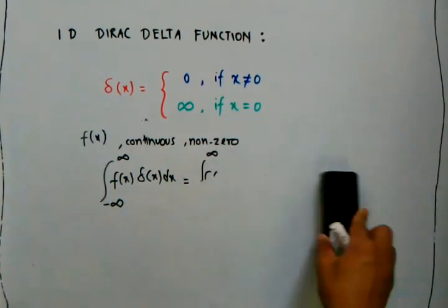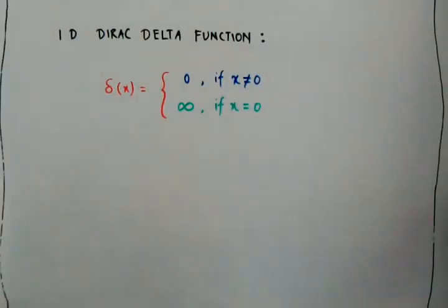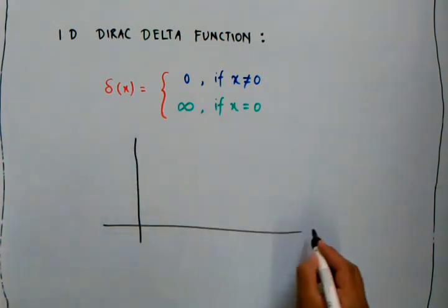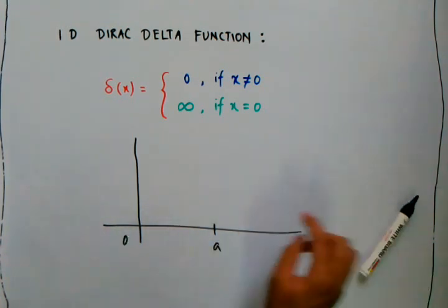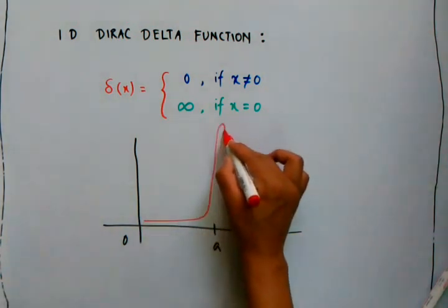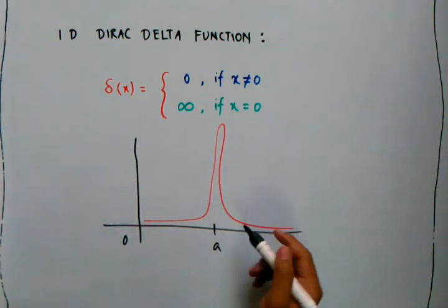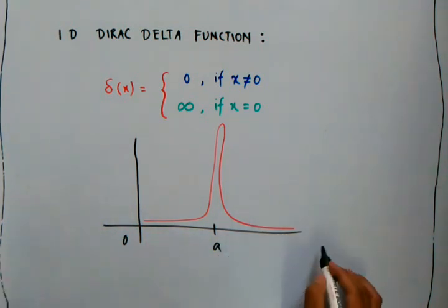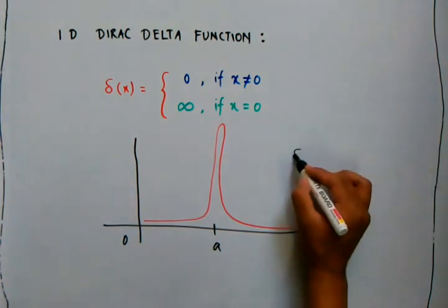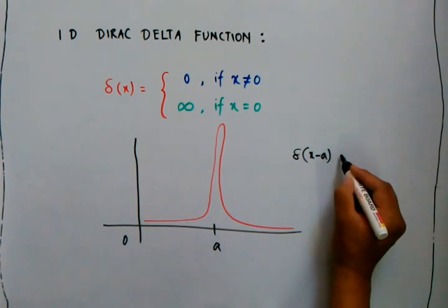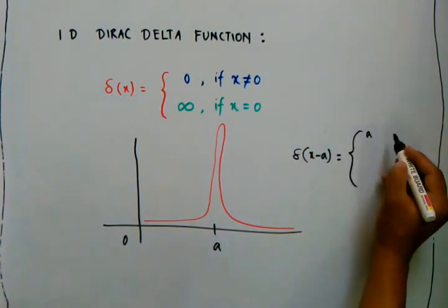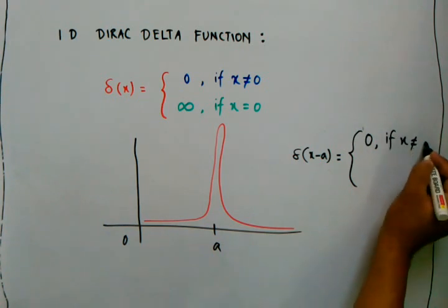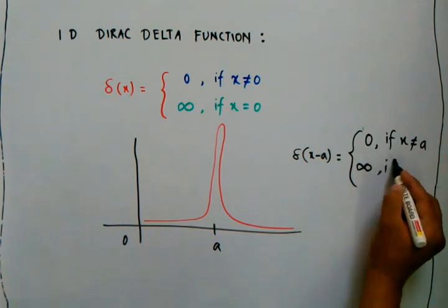This can have many uses for practical purposes and other applications. We can also shift the peak of the Dirac delta function. Suppose on the coordinate axis this point is 'a' and this is zero — we can shift the Dirac delta function to 'a'. The shifted Dirac delta function δ(x − a) becomes infinity only at x = a, and equals zero at all other values.